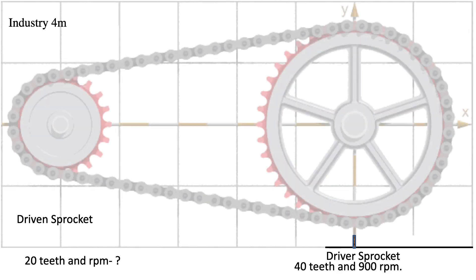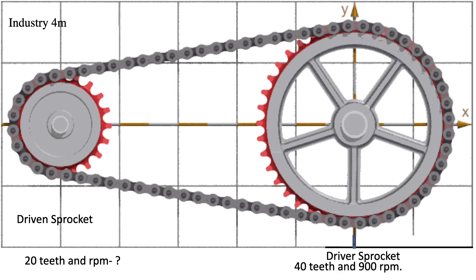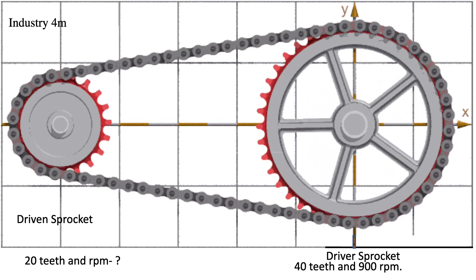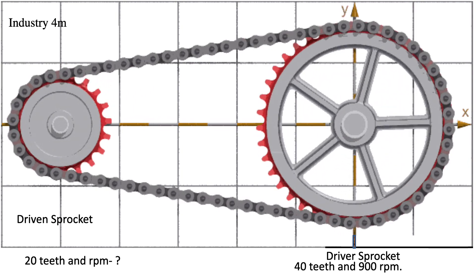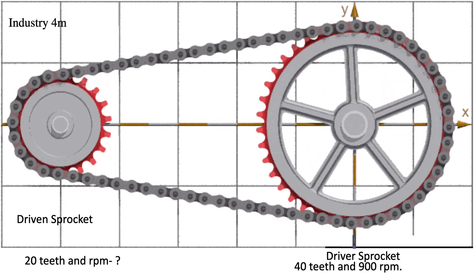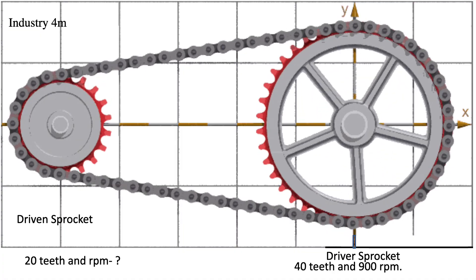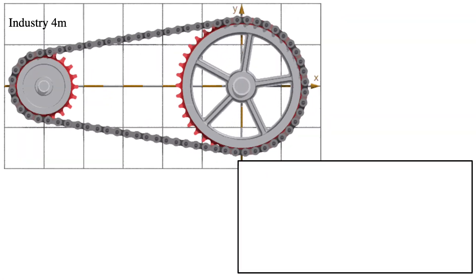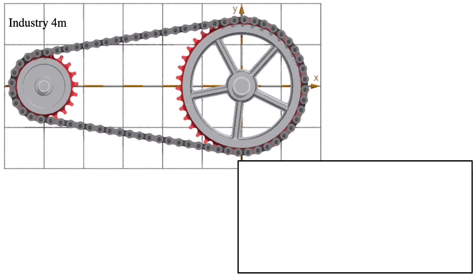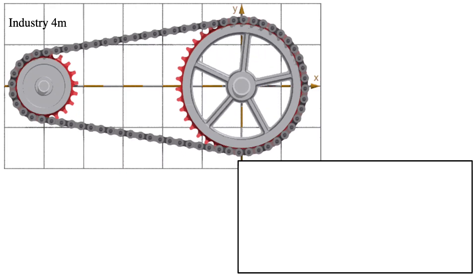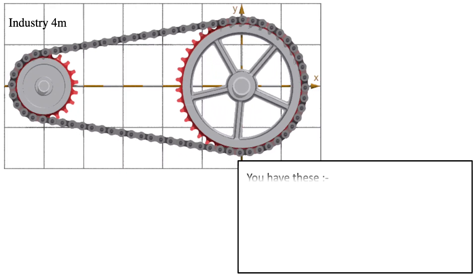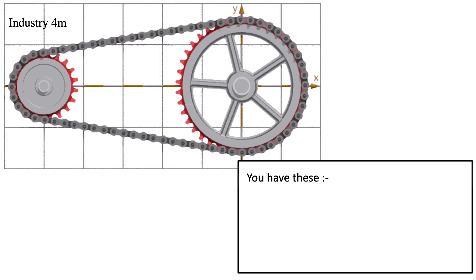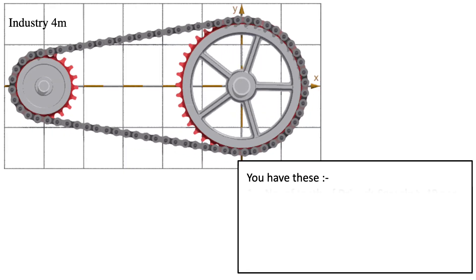In this video you can see a roller chain drive mechanism — you can see the driver's sprocket and one driven chain sprocket. The driver's chain sprocket has 40 teeth and an RPM of 900. The driven sprocket has 20 teeth, and we need to find the RPM of this sprocket.